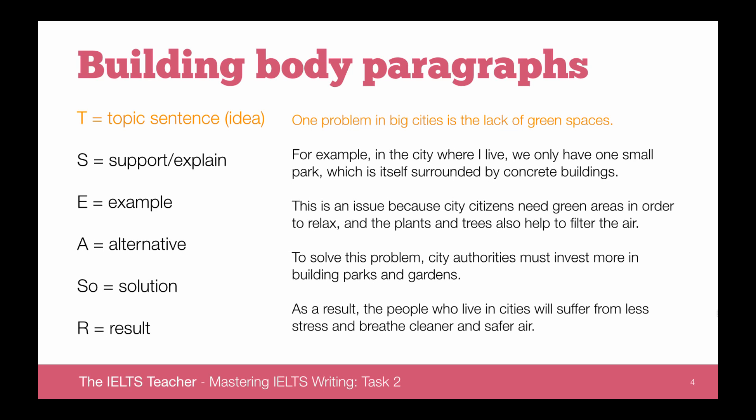You can follow the topic sentence with any of the following sentences except the solution: a supporting sentence (also known as an explaining sentence), an example, or a result. Most of the time you'll follow it with an example or a supporting sentence in either order. Here we see an example of a lack of green spaces: 'For example, in the city where I live, we only have one small park, which is itself surrounded by concrete buildings.' We follow this with a supporting sentence: 'This is an issue because city citizens need green areas in order to relax, and the plants and trees also help to filter the air.'